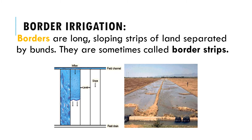When the desired amount of water has been delivered to the border, the stream is turned off. However, if the flow is stopped too soon, there may not be enough water in the border to complete the irrigation at the far end. If it is left running for too long, the water may run off the end of the border and be lost in the drainage system.